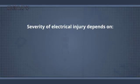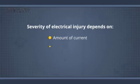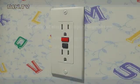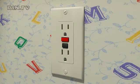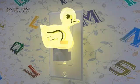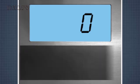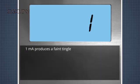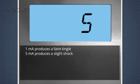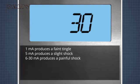The severity of an electrical injury depends on a couple of factors: the amount of electrical current flowing through the body and the length of time the current is conducted. Keep in mind that a typical home outlet can conduct 15 amps at 120 volts, and that a typical nightlight operates at about 30 milliamps or 0.033 amps. The following are examples of the effects of different levels of current lasting one second at typical household voltages. One milliamp produces just a faint tingle. Five milliamps produces a slight shock. Six to 30 milliamps produces a painful shock — at this level muscular control is lost and it may not be possible to let go of the source of shock.